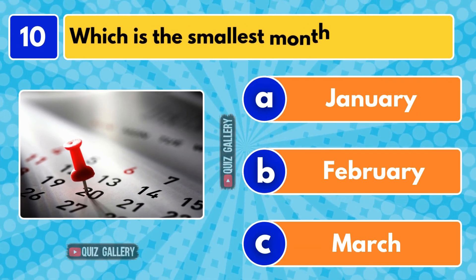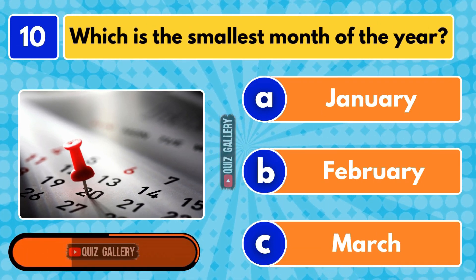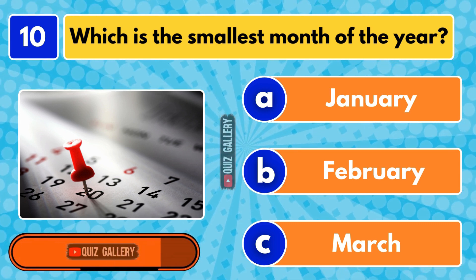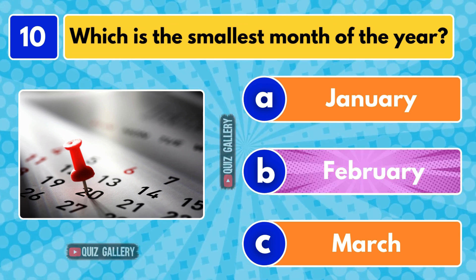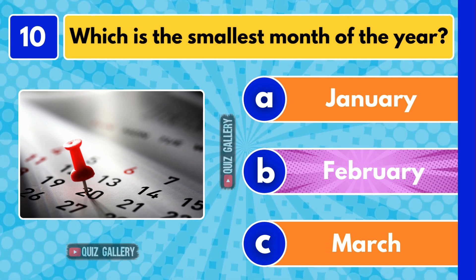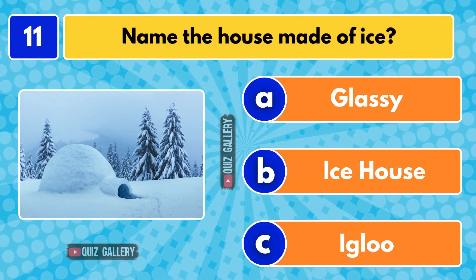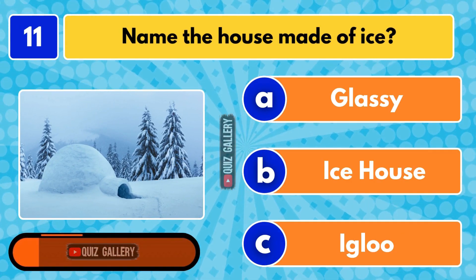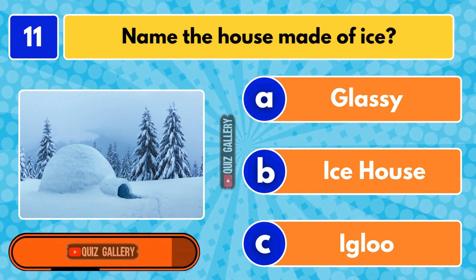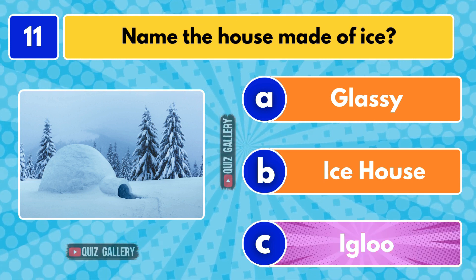What is the smallest month of the year? February. Name the house made of ice. It is called igloo.